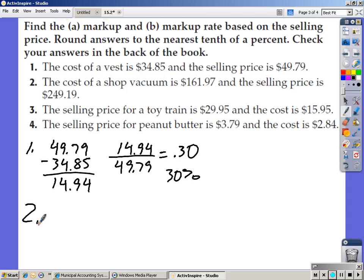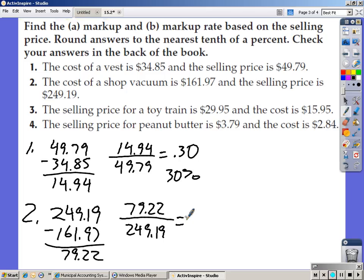Number two, the cost of a shop vac is $161.97. Selling price is $249.19. $249.19 minus $161.97. It's $79.22. $79.22 divided by $249.19 is .317. That works out to be 31.8%.